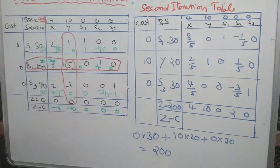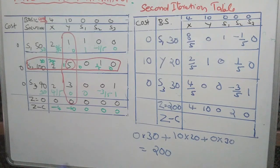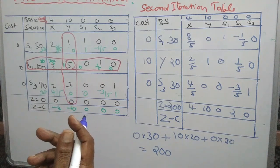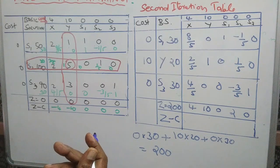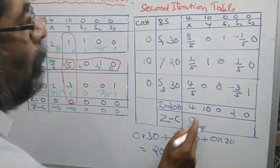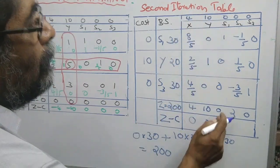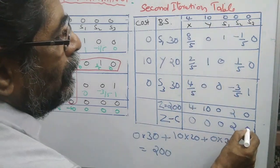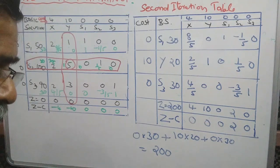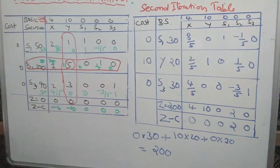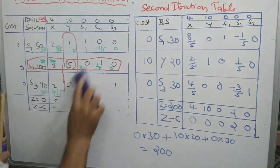Then go for Z minus C. We are looking for all positive values of Z minus C. If Z minus C is positive, the solution is optimum; otherwise we have to repeat the same procedure. Now let us see: 4 minus 4 equals 0, 10 minus 10 equals 0, 0 minus 0 equals 0, 2 minus 0 equals 2, 0 minus 0 equals 0. By God's grace, all values of Z minus C are 0 or positive. Therefore our solution is optimum.